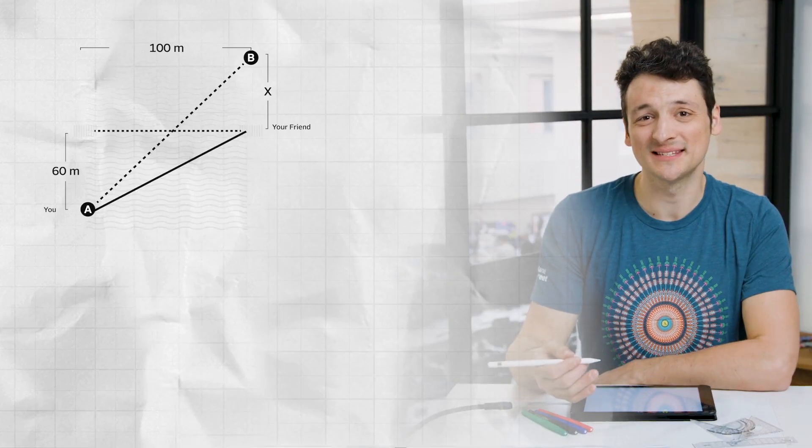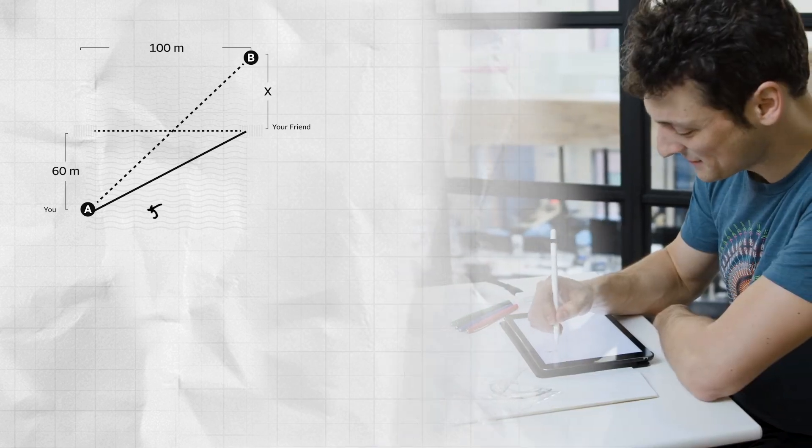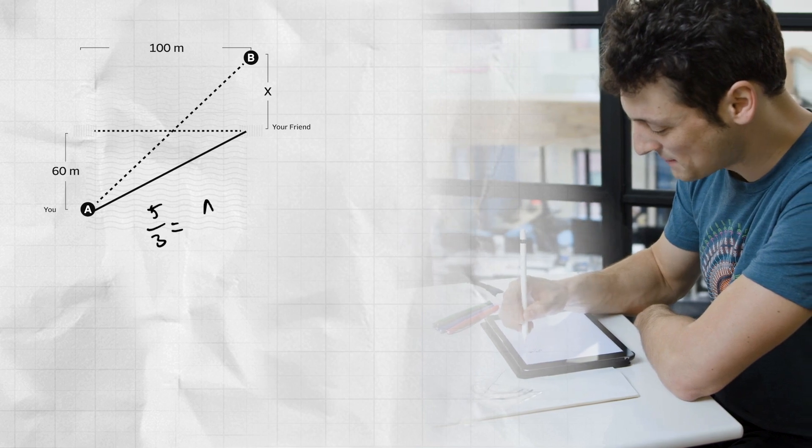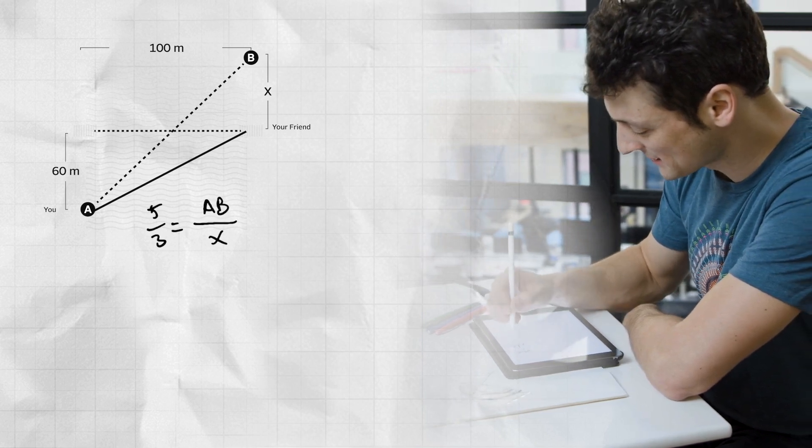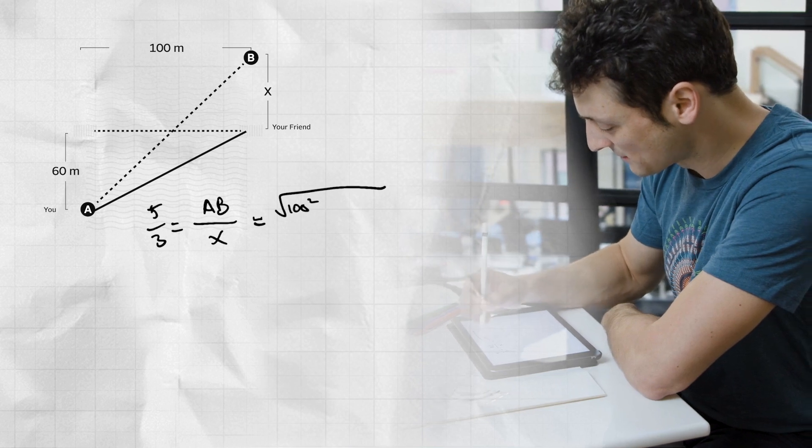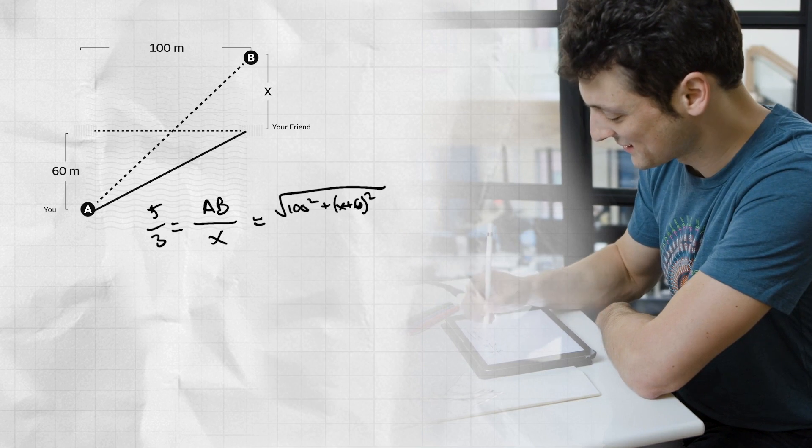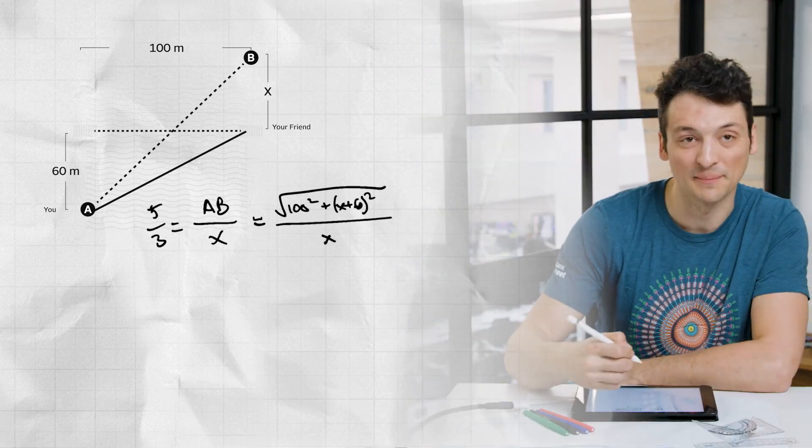For these two distances to line up, you need the ratio of them to equal 5 thirds again. That is 5 thirds equals AB over x, which is the square root of 100 squared plus quantity x plus 60 squared over x by the Pythagorean theorem.